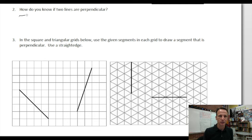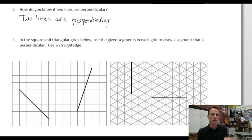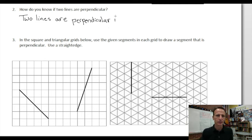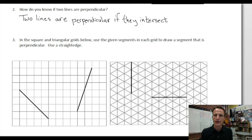Let's answer in a complete sentence. Two lines are — and look at the spelling of this word, might as well learn to spell these — perpendicular. We say 'perpendic-u-lar,' but I'm saying 'lar' so you remember the spelling. That's an AR, like dollar and seller and collar. Two lines are perpendicular if they intersect at right angles. It's that simple.